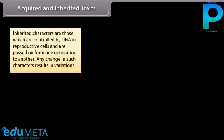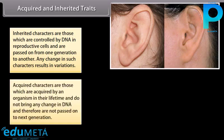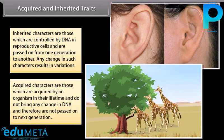Inherited characters are those which are controlled by DNA in reproductive cells and are passed on from one generation to another. Any change in such characters results in variations. Acquired characters are those which are acquired by an organism in their lifetime and do not bring any change in DNA, and therefore are not passed on to the next generation.